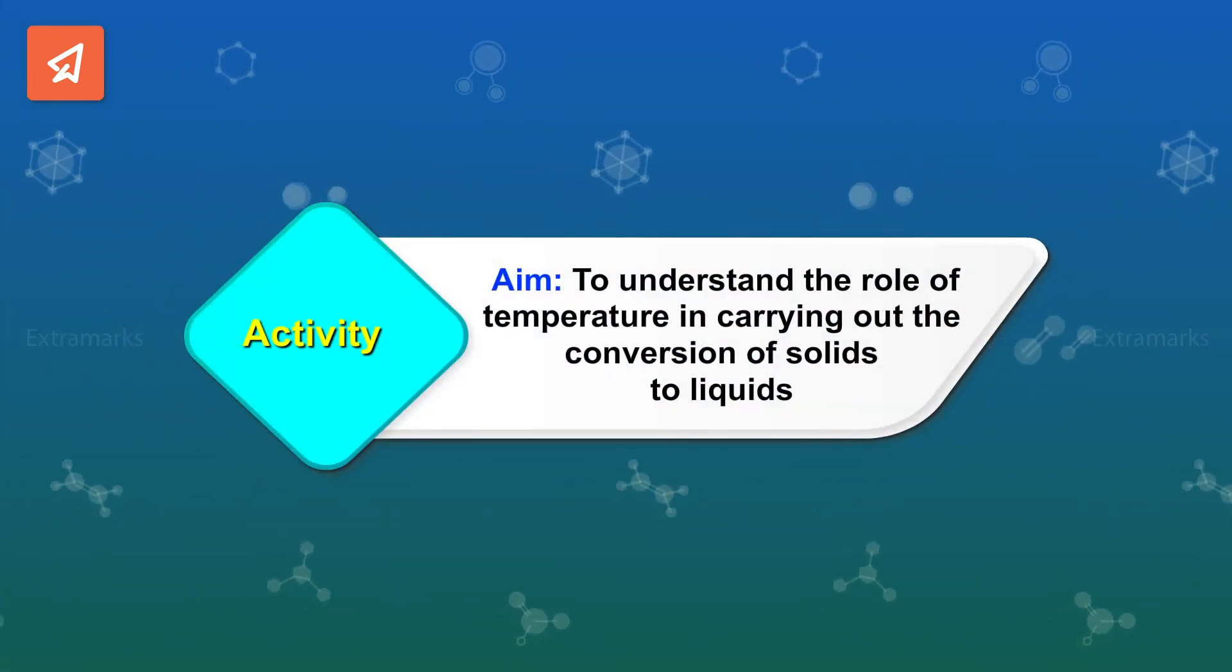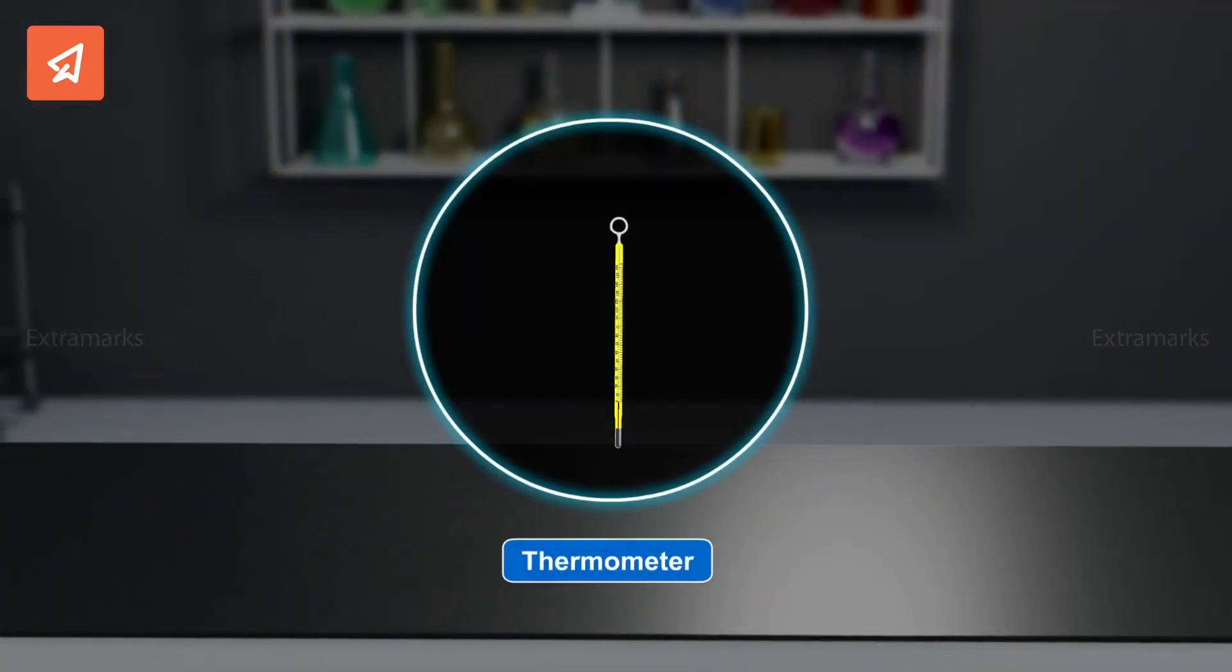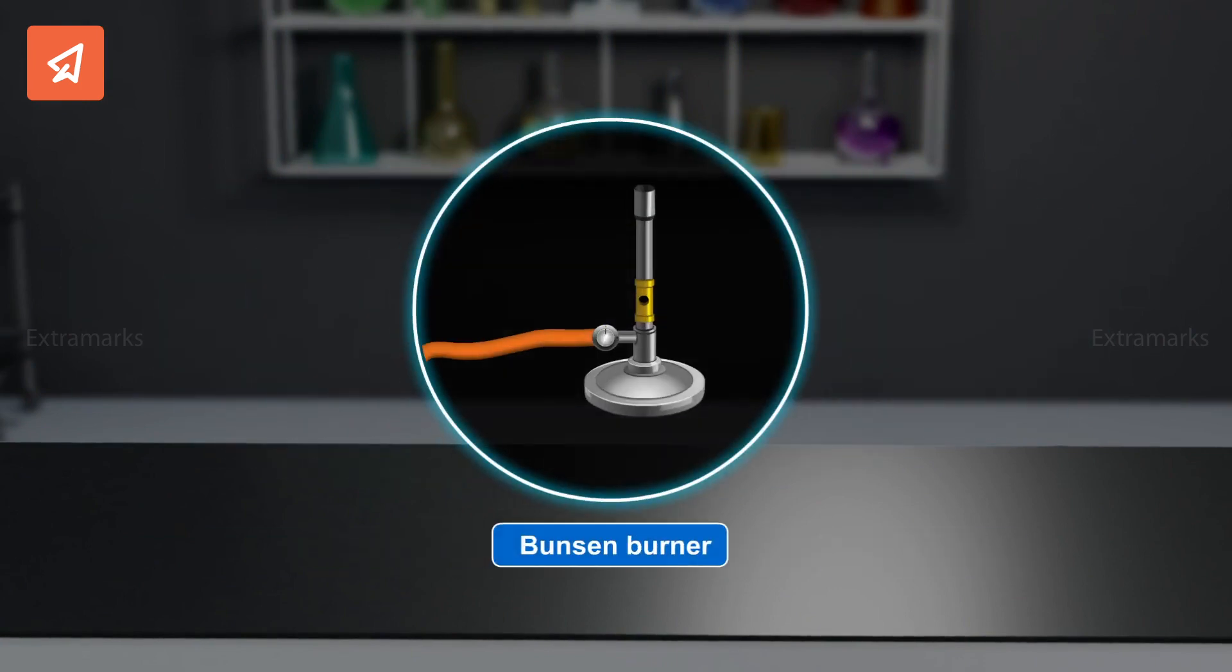Let us understand its effect with the help of an activity. This activity requires ice cubes, beaker, thermometer, a wire gauge, tripod stand and a Bunsen burner.